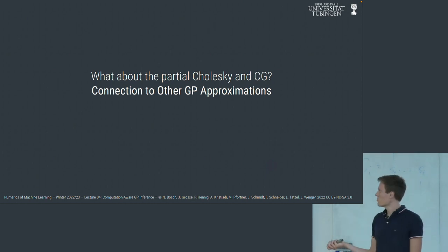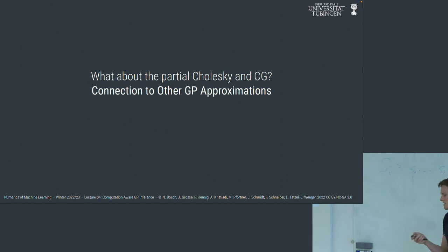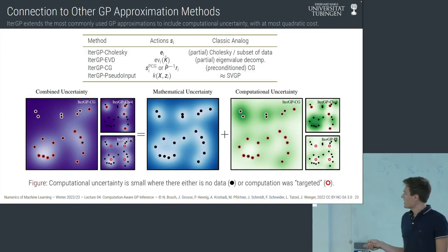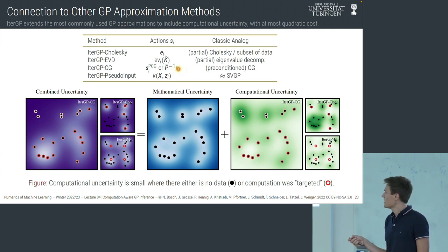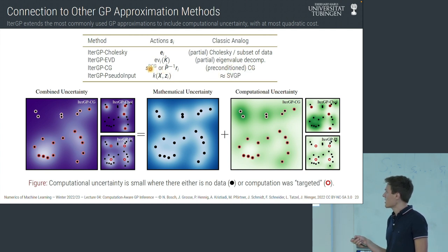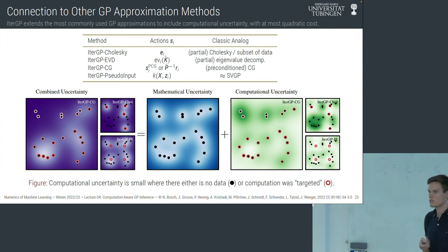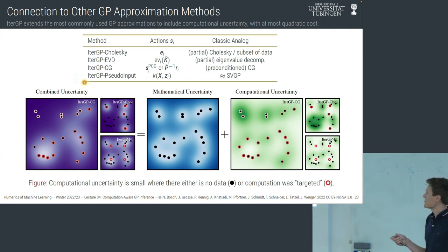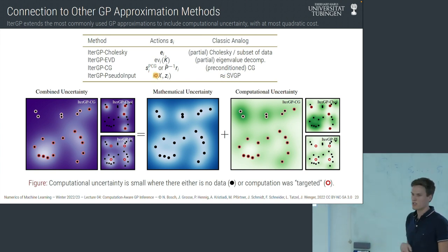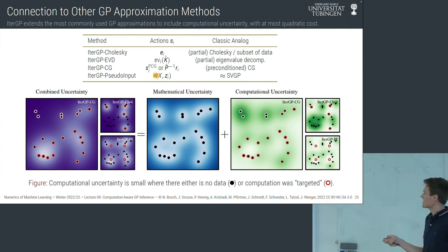Partial Cholesky and CG both fit into this framework. Unit vector actions recover partial Cholesky (also called subset-of-data). Preconditioned residual actions recover preconditioned CG, or equivalently choosing conjugate actions directly since they're automatically made conjugate. We can also design a method similar to the sparse GP approximation by choosing actions that are kernel functions centered at inducing points, weighting data points according to the kernel function's magnitude.